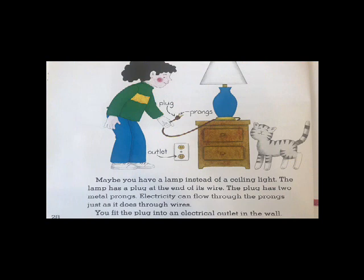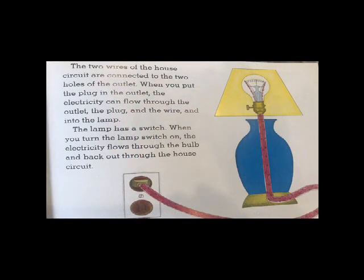Maybe you have a lamp instead of a ceiling light. The lamp has a plug at the end of its wire. The plug has two metal prongs. Electricity can flow through the prongs just as it does through the wires. You fit the plug into an electrical outlet in the wall. The two wires of the house circuit are connected to the two holes of the outlet.